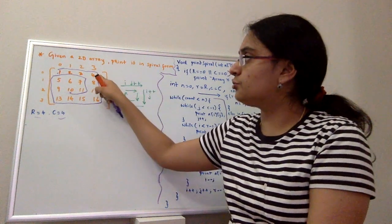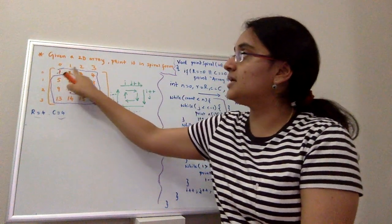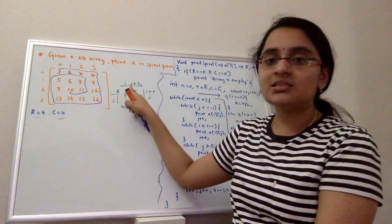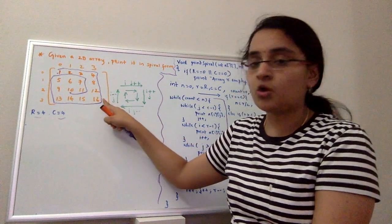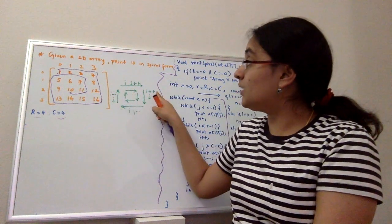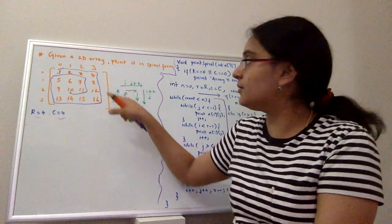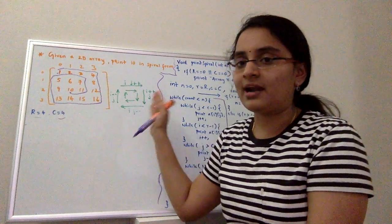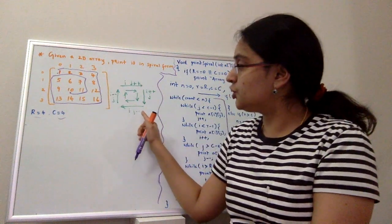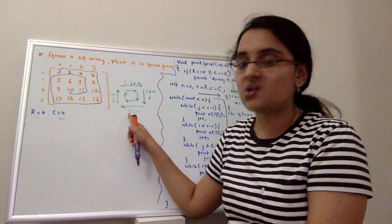When you're printing the first row, your row index is constant but your column index changes. When you're printing the column from top to bottom, your row index changes because you're printing the same elements of the column. And again when you're printing the row from right to left, you're decrementing the column index and the row index is constant.